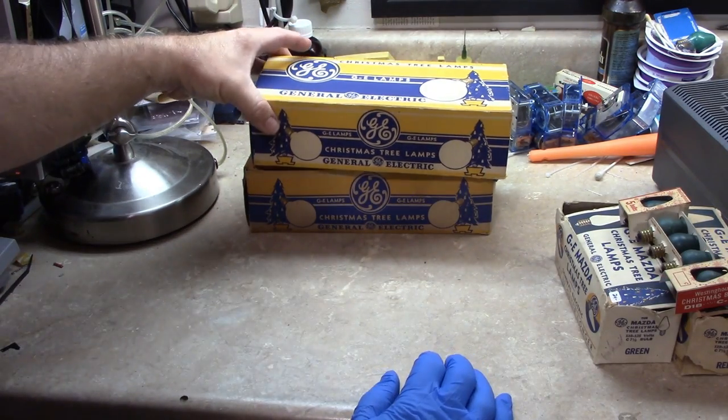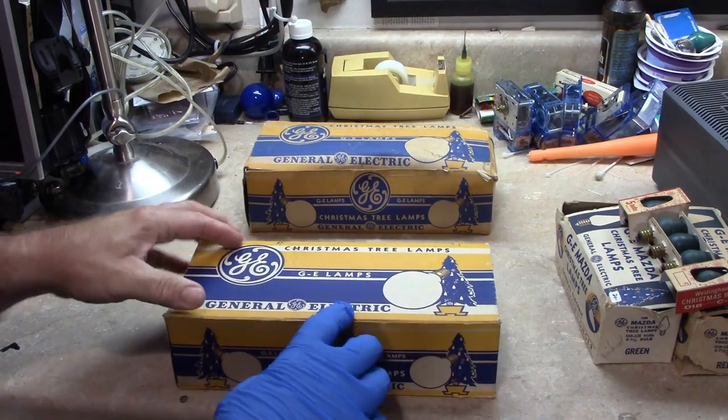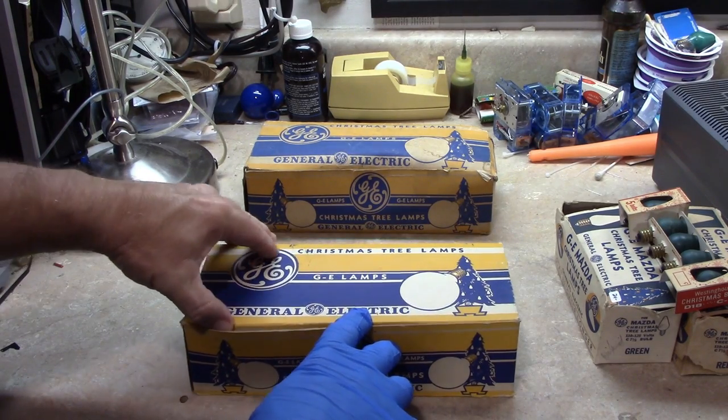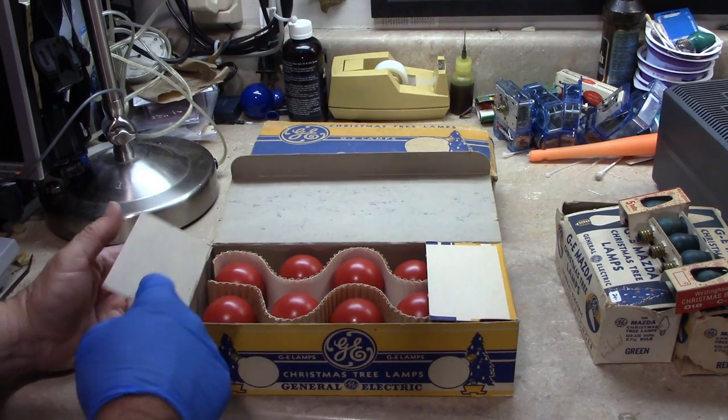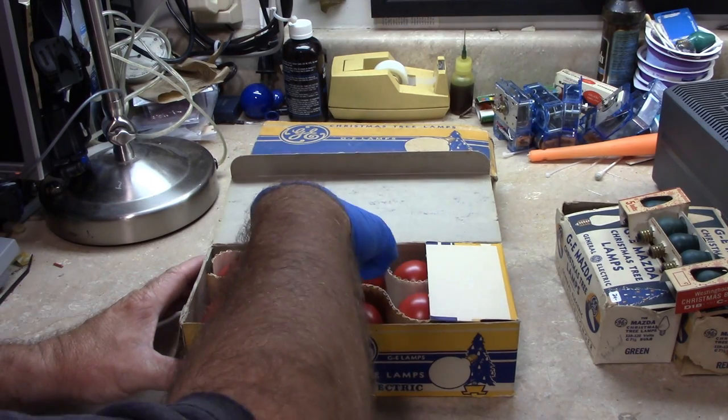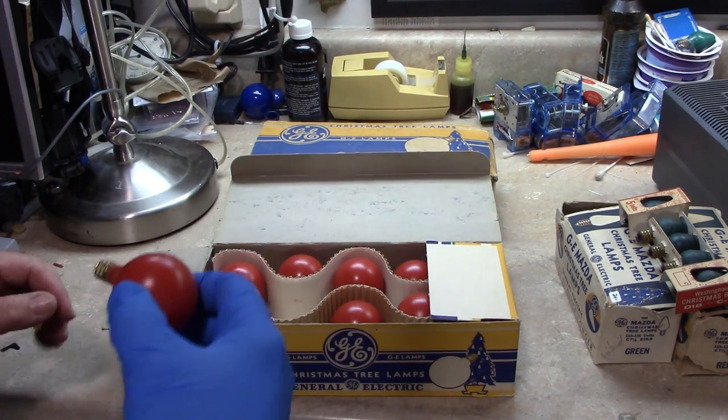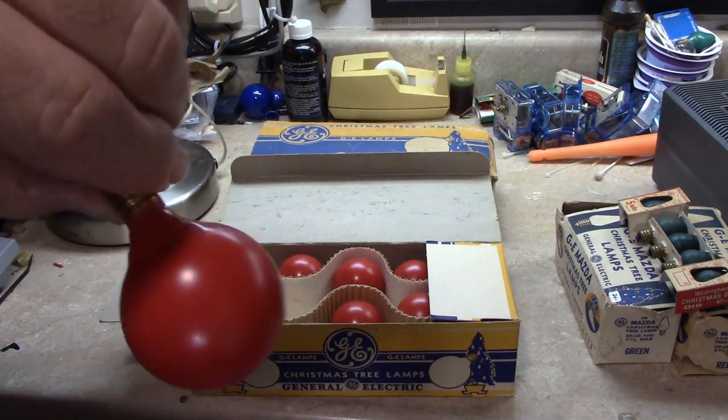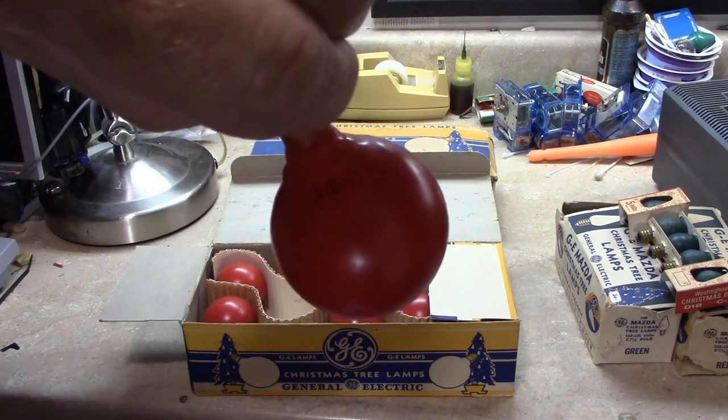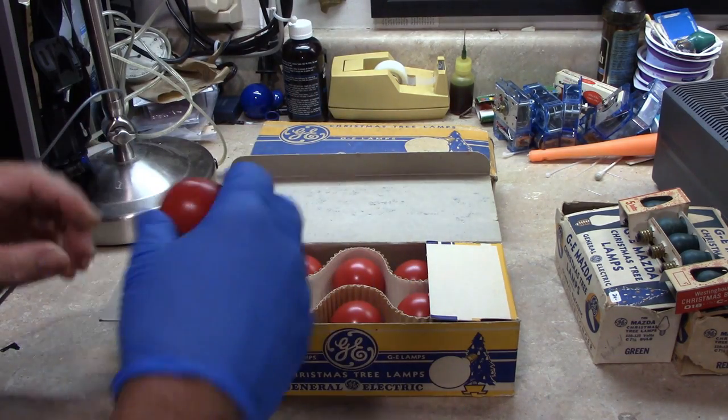I found the G14 bulbs as well. I have one with the pristine box but the bulbs are just a little bit crazed. That's this style of bulb here. They're a little bit later because they just have the GE block logo.